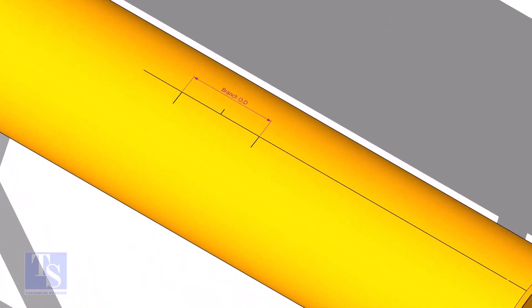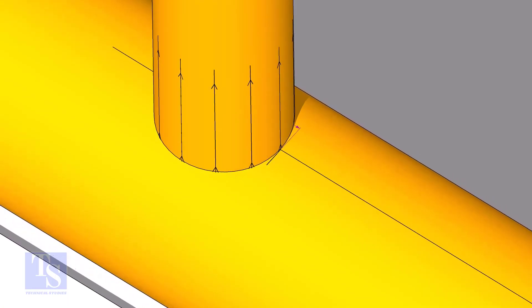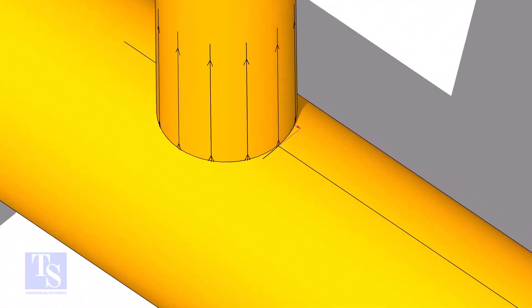Mark the branch OD on the center line of the header. Put the branch exactly on this marking, matching the branch center line.